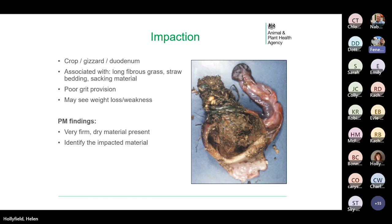Impaction — the crop, gizzard and duodenum can all become impacted. This is usually associated with ingesting long fibrous grass or vegetation, straw bedding or pieces of sacking material, which coil up and form a plug. Impaction is exacerbated by the absence of grit, which is needed to aid the grinding function of the gizzard. We typically see impaction in free-ranging chickens when ranges are strimmed but the grass isn't collected up. Clinically, affected birds may be weak, show weight loss, or be found dead. The photo shows an impacted gizzard with dry fibrous content including long strands of grass.